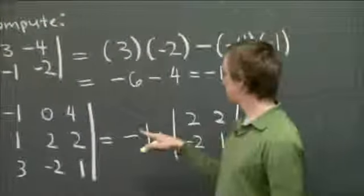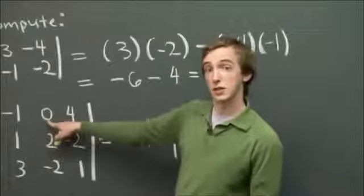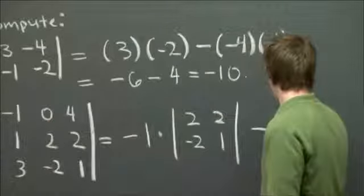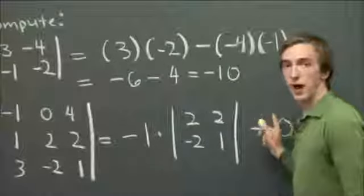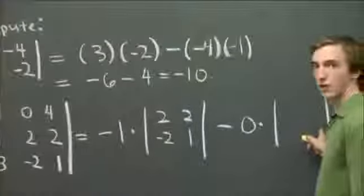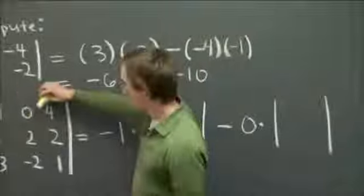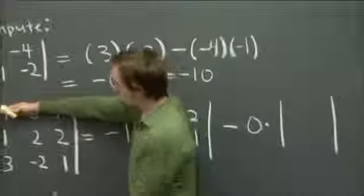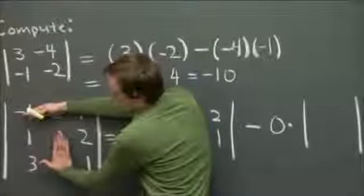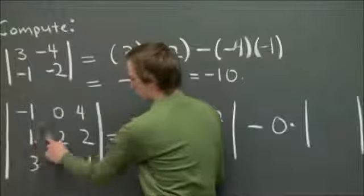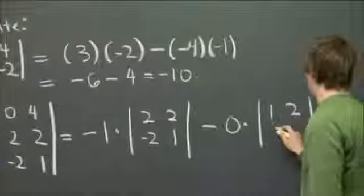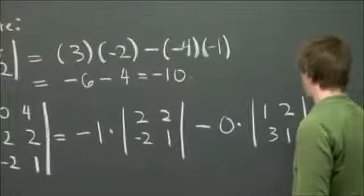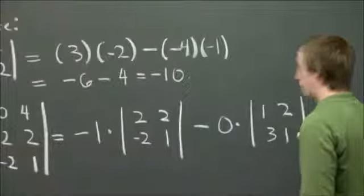The next entry, we have to take negative of this entry, but this entry is 0. So minus 0 times. Just for practice, why don't I put in this cofactor here anyways. So again, we cover up the row and the column containing the 0. And we have this matrix, 1, 2, 3, 1.